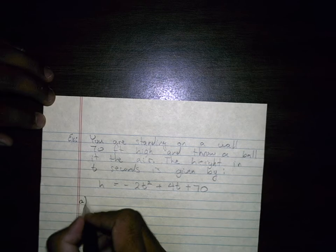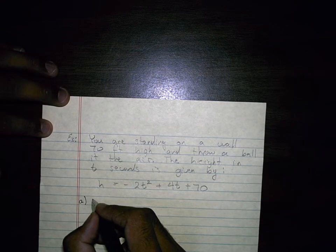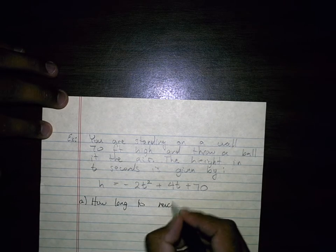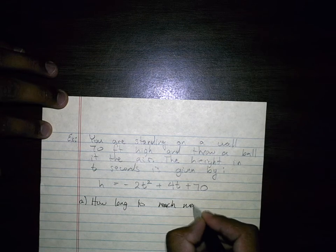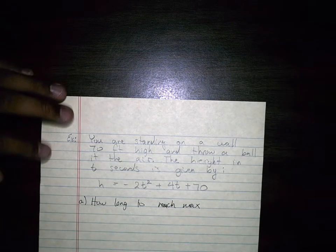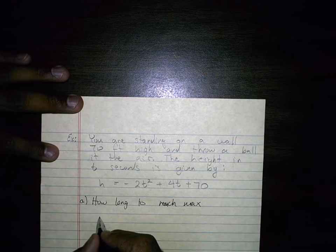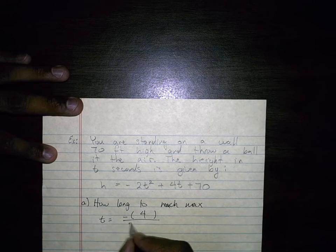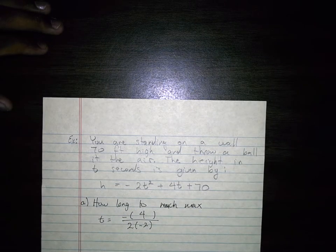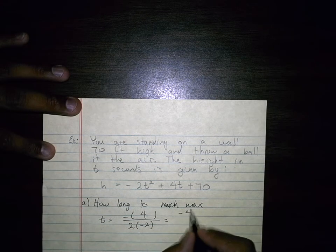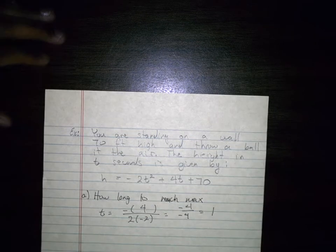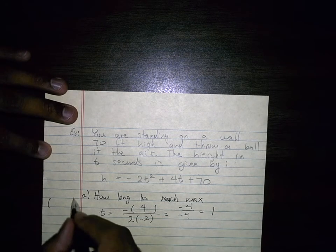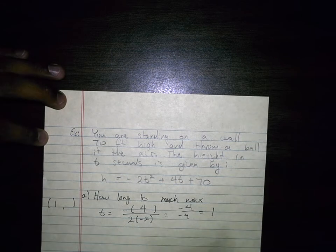So A is, let's see, how long to reach max? So we're going to find the x of the vertex. So we're going to go ahead and say t equals negative b, which is a 4, all over 2 times negative 2. And then that equals negative 4 over negative 4, that equals 1. So we didn't throw it - this thing wasn't in the air very long. So the x coordinate, but in this case, t is 1.